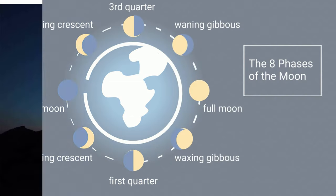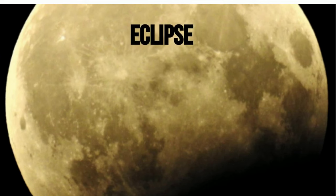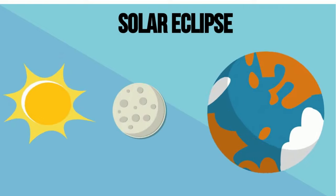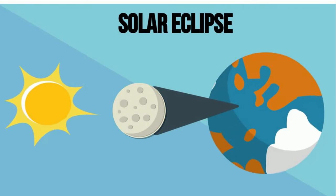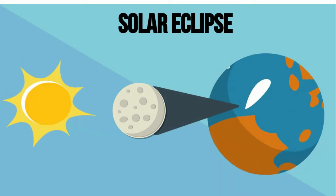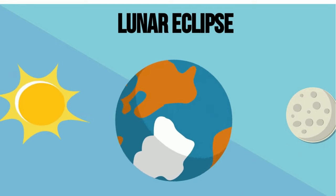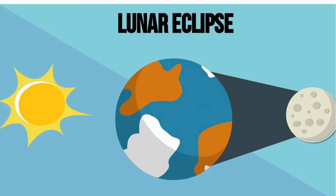When the shadow of one celestial body, like the Moon or the Earth, falls on another, an eclipse occurs. A solar eclipse happens when the Moon comes between the Earth and the Sun, and the shadow of the Moon falls on part of the Earth. A lunar eclipse happens when the Earth comes between the Sun and the Moon, and the shadow of the Earth falls on the Moon.